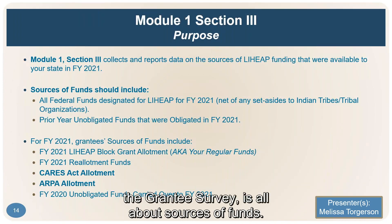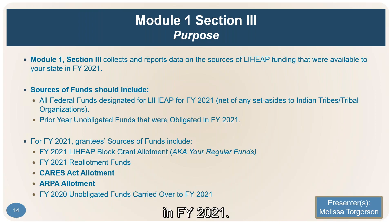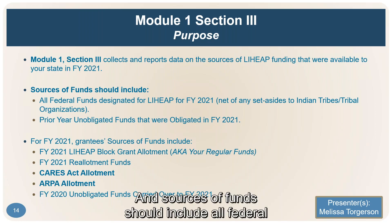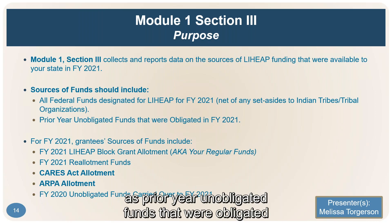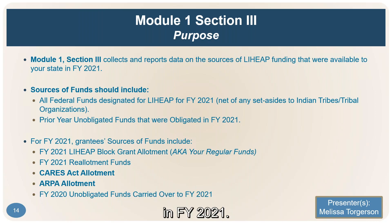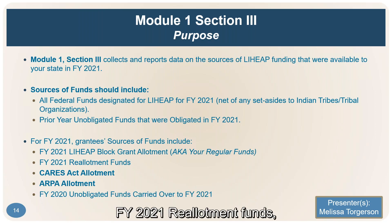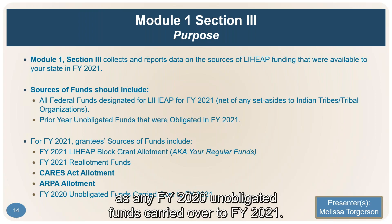The first part of Module 1, the Grantee Survey, is about sources of funds — data on the sources of LIHEAP funding available to your state in FY 2021. Think of it like a checkbook: this is looking at the deposits. Sources of funds should include all federal funds designated for LIHEAP in FY 2021, as well as prior year unobligated funds that were obligated in FY 2021. These include the FY 2021 LIHEAP Block Grant Allotment, reallotment funds, the CARES Act allotment, the ARPA allotment, and any FY 2020 unobligated funds carried over to FY 2021.